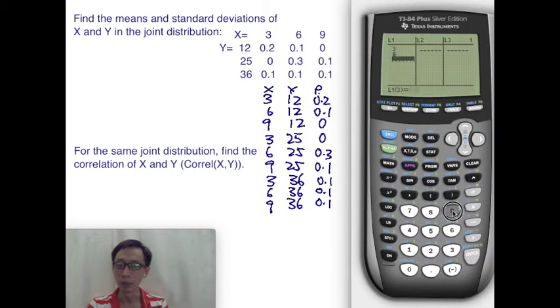Alright, so 3, 6, 9, 3, 6, 9, 3, 6, 9. Very quickly, because for the calculator, it's easier to enter number by number in the same list first. So we repeat this, then 12, 12, 12, then 25, 25, and 25, and finally 36, 36, 36.